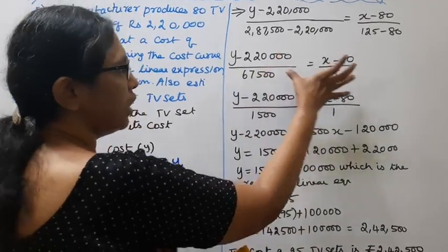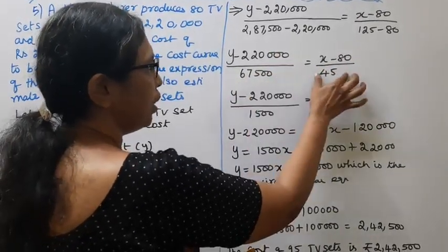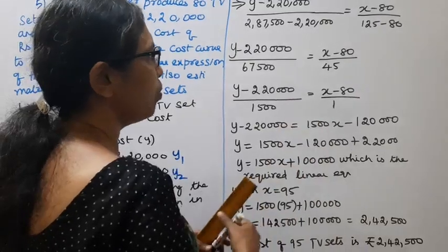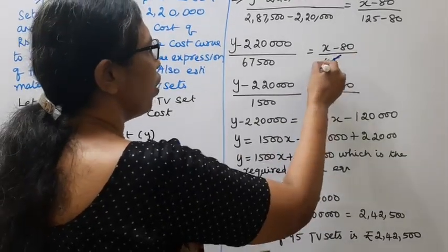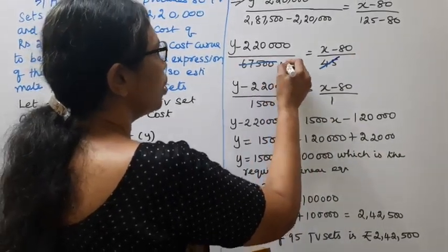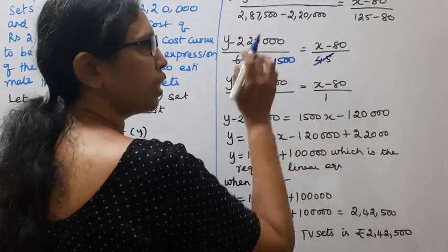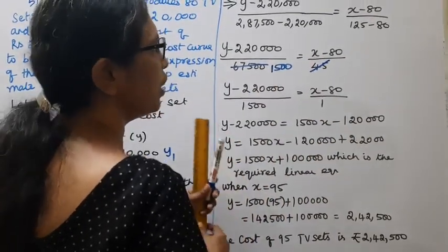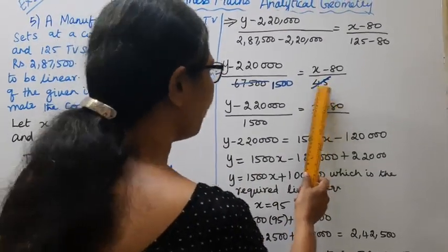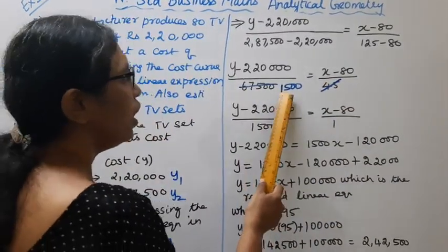This is left hand side and this is right hand side. These denominators we can cancel. 45 goes into 1500. If you divide 1500 by 45, you get the cancellation.